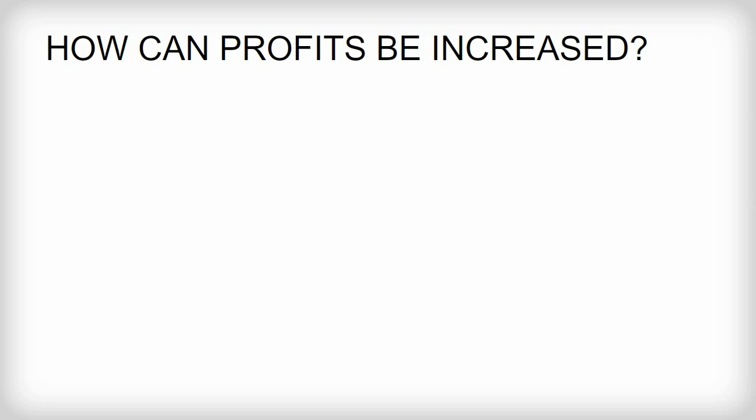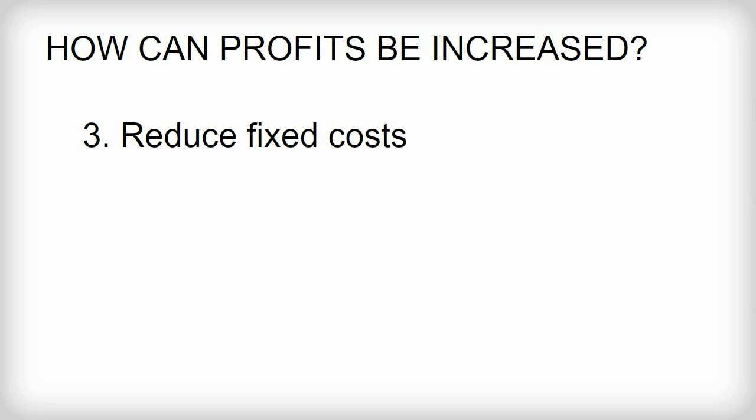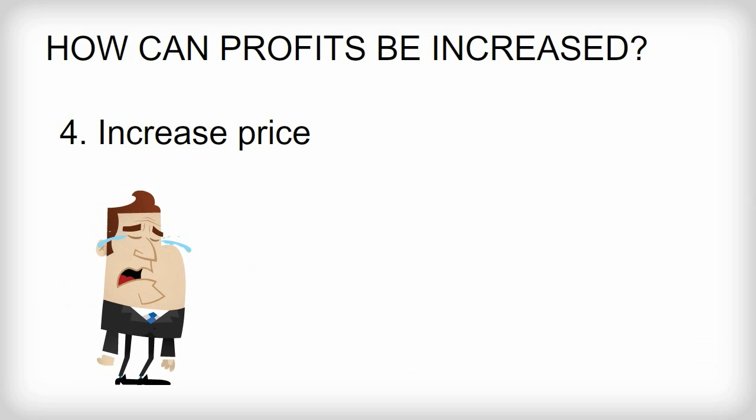Three: increase net profit margin by reducing fixed costs. Fixed costs can be reduced by selling online instead of through physical shops, which could involve reducing fixed costs such as rent or management costs. Four: increase net profit margin by increasing price. The less competition there is for a business, the more opportunity there is to increase price. But there is usually a danger that customers switch to other firms or products if you put your prices up.